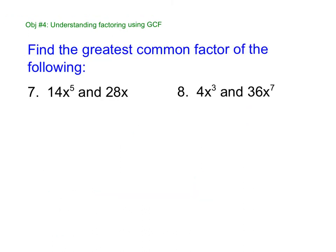All right. Pause the video. Try these. All right, so 14 and 28 is 14. And then X to the 5th and X is X. Next one. 4 and 36 is 4. Who's smaller? 3 or 7? 3. So notice the GCF of 4X to the 3rd is 4X to the 3rd. And that happens sometimes. That's okay.